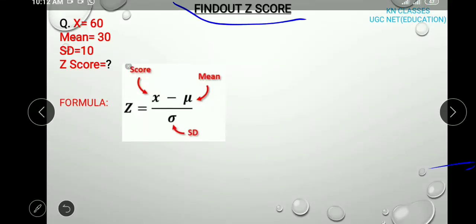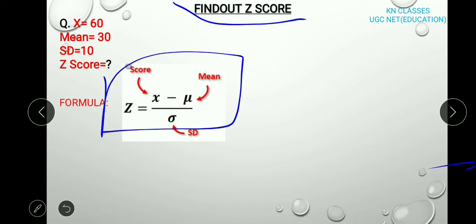So friends, this is very easy, but you have to remember this formula. Z-score is equals to X minus M. X means the score and M is the mean of the population. X minus mean divided by standard deviation. Then, come to the question and find out the X, the score, the mean, and standard deviation from the question.